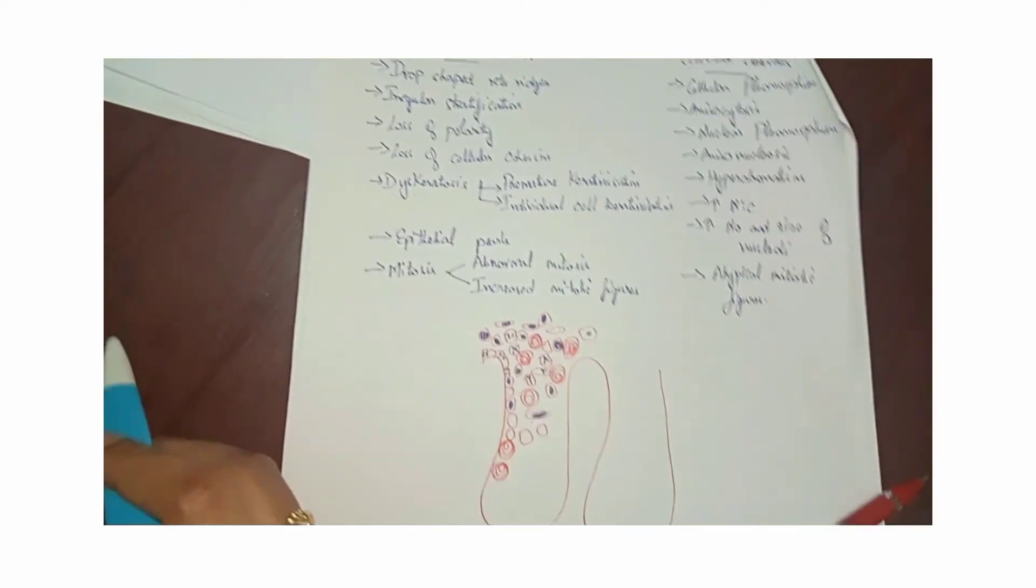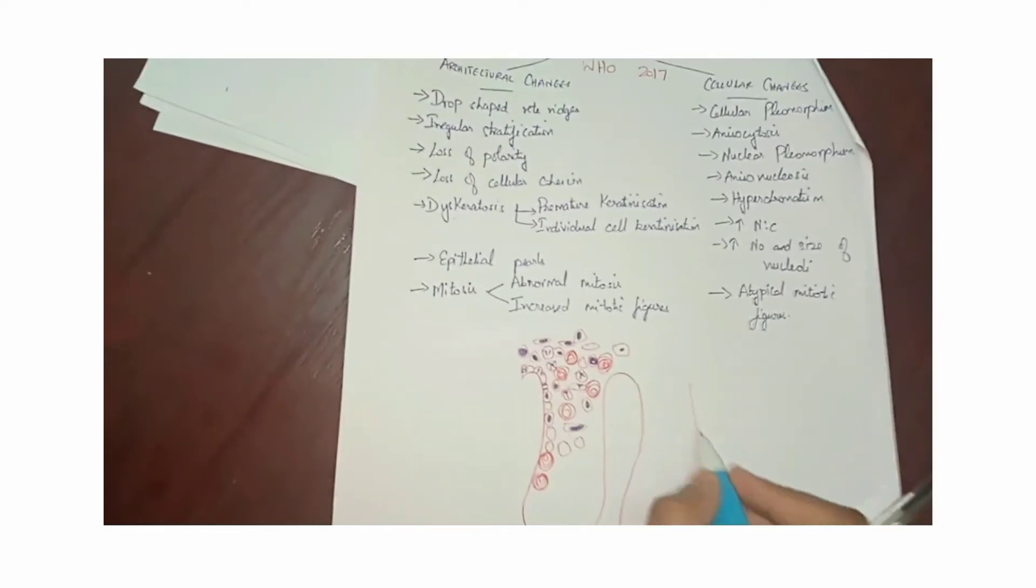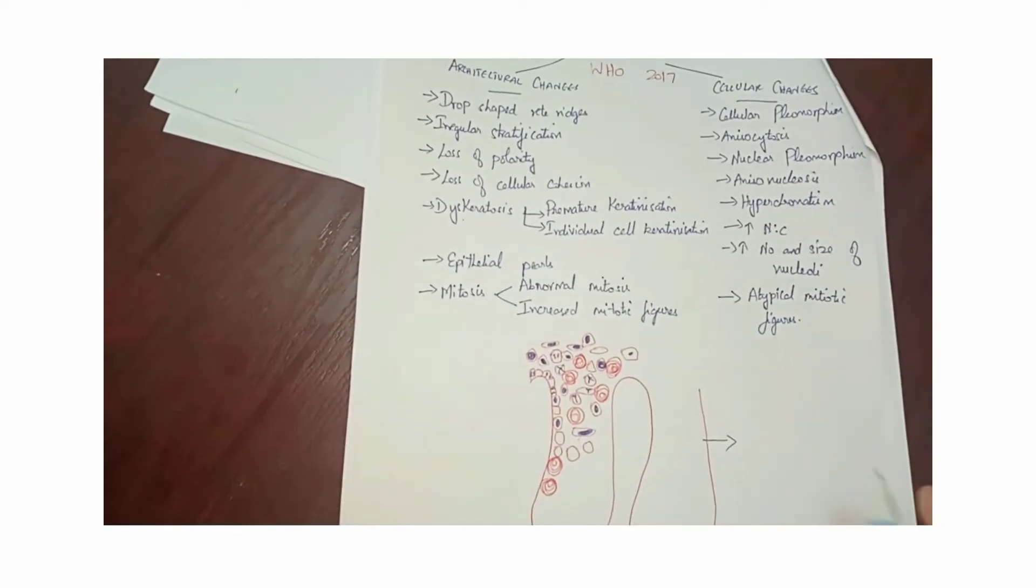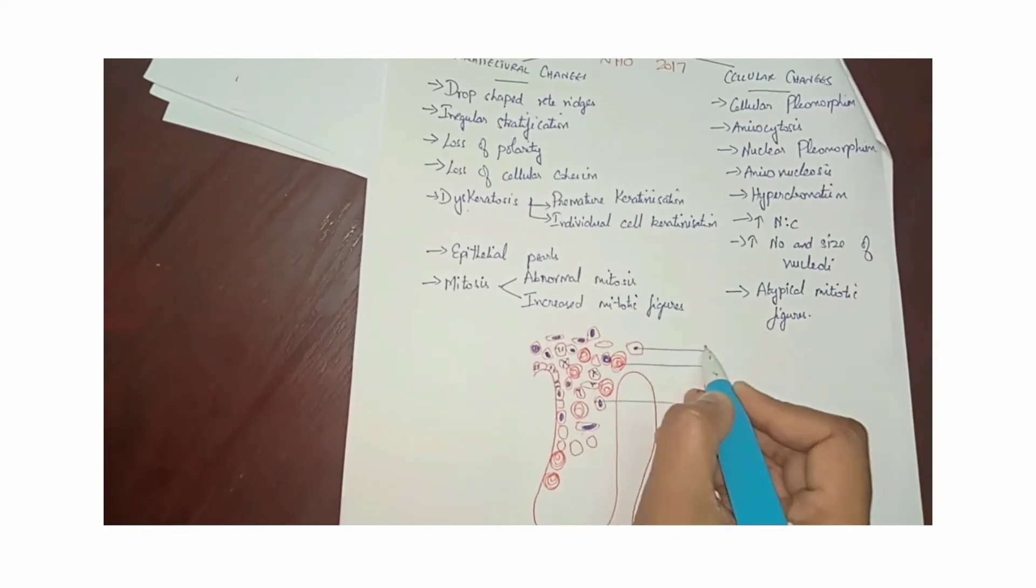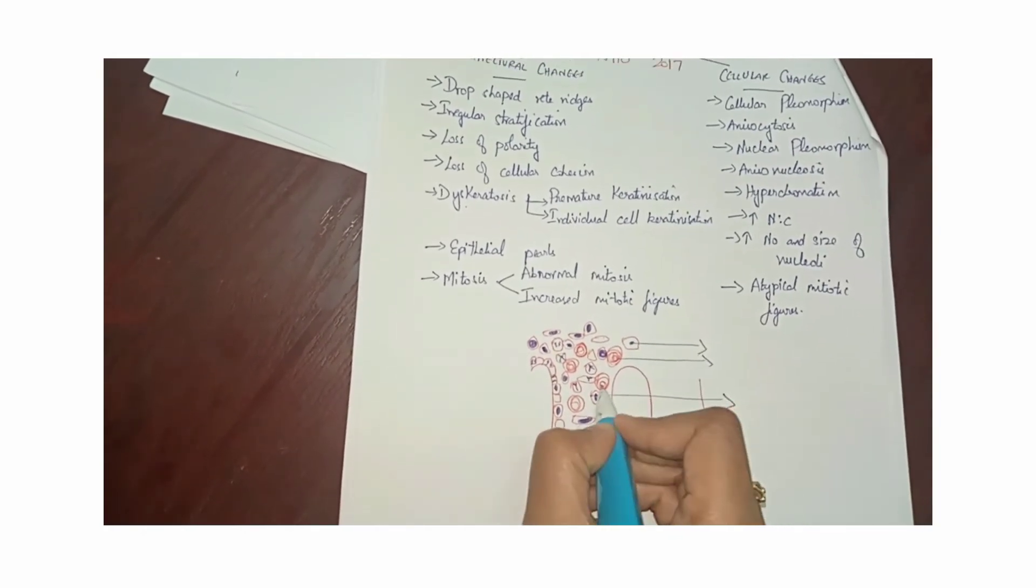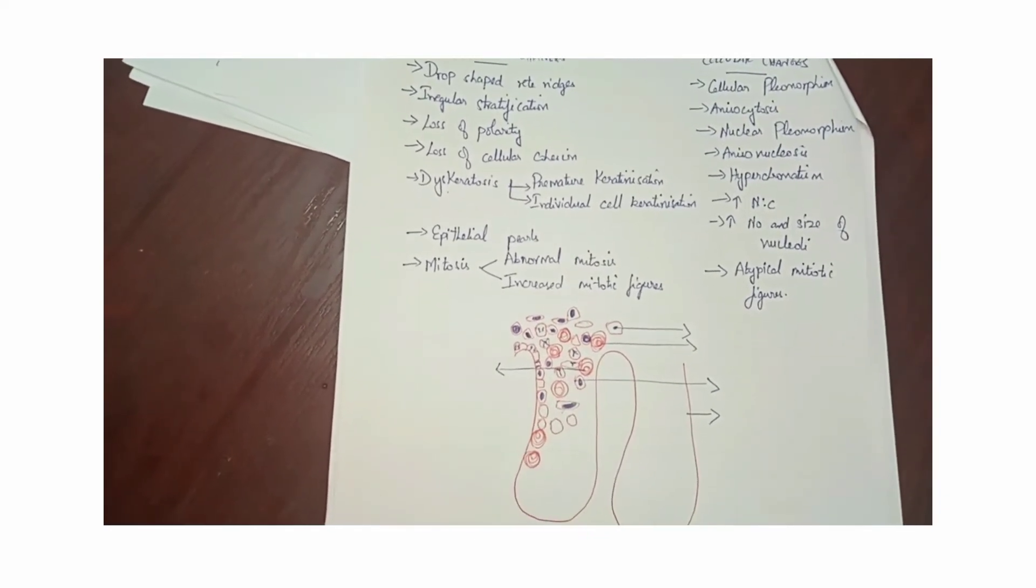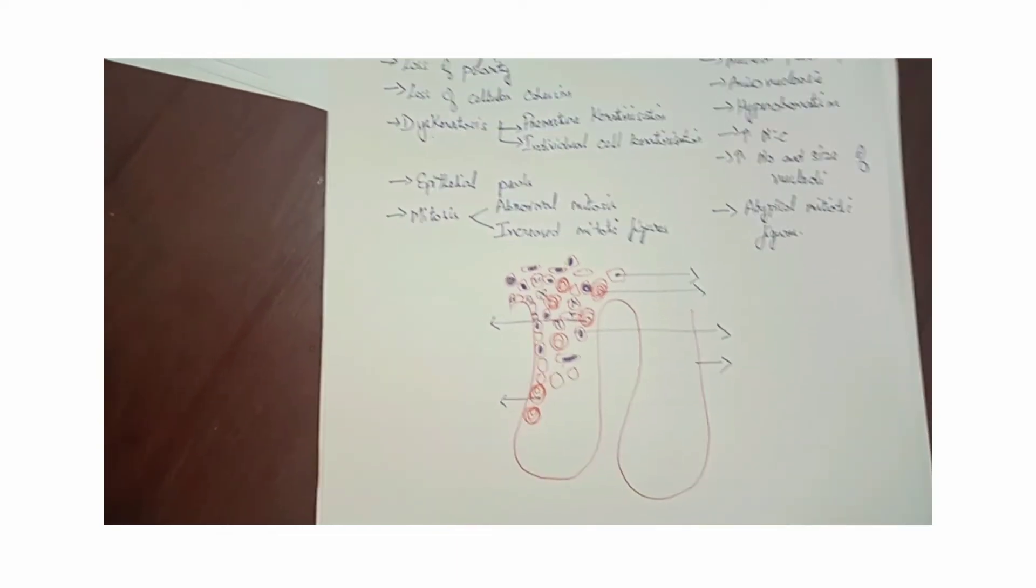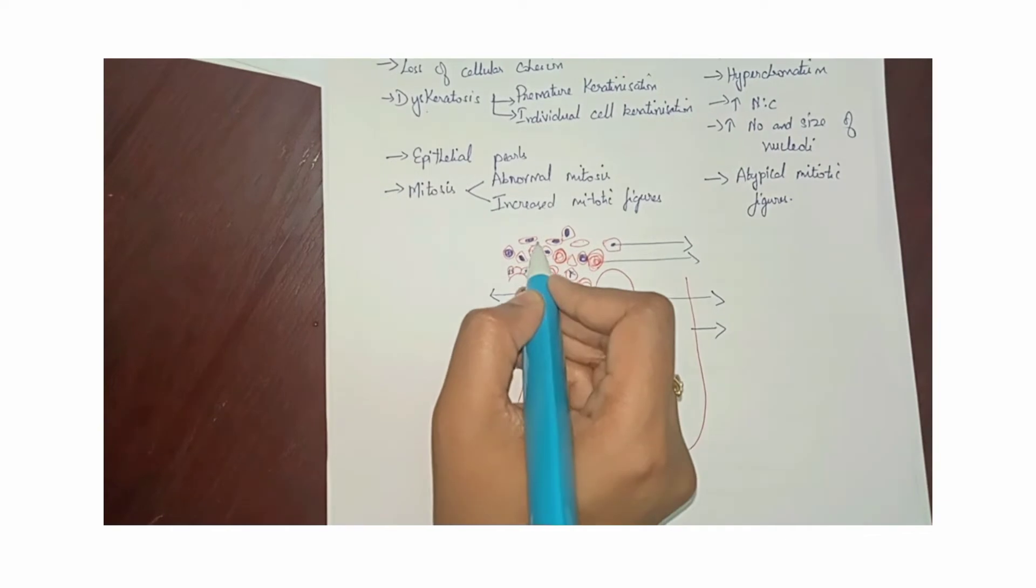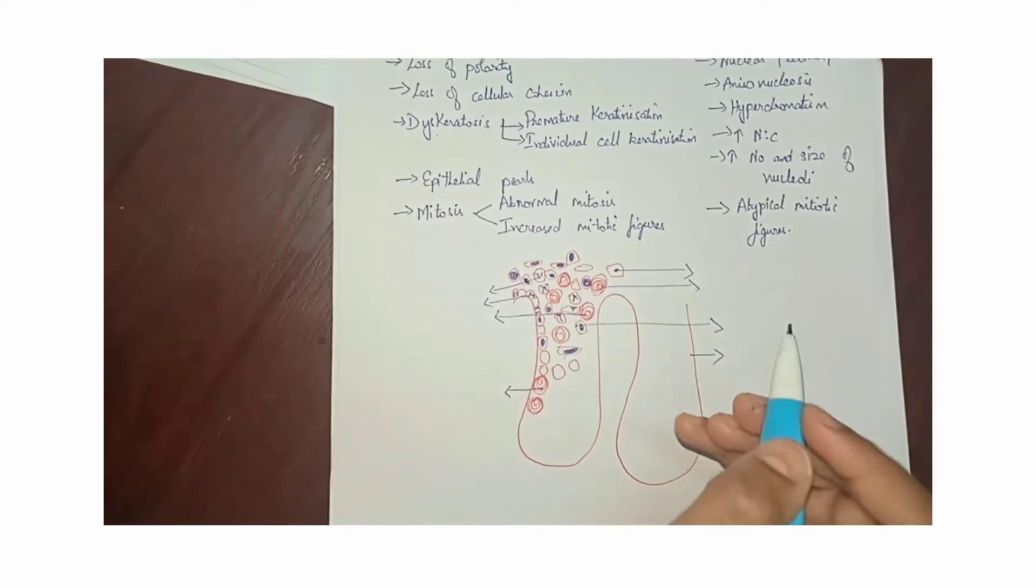To summarize, there is going to be drop shaped reti ridges, irregular stratification, loss of polarity, loss of cell cohesion, and dyskeratosis with premature keratinization and individual cell keratinization. There is presence of epithelial pearls at the levels of even reti ridges, and abnormal and increase in the mitotic figures.